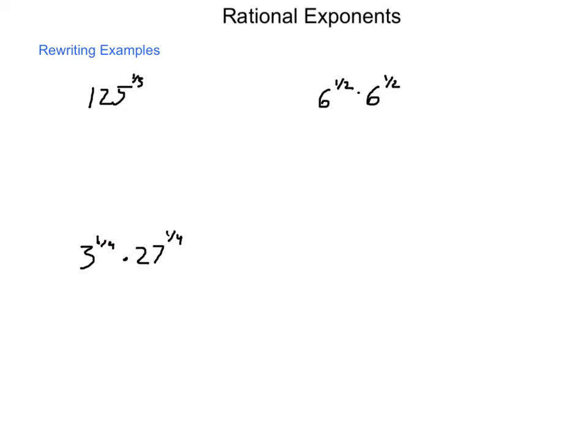So if I have 125 to the 1 third power, how would this be rewritten? Well, 125 stays the same. That is our radicand. And we're going to turn this into a root. Now, since this is a 1 third power, the 3, that denominator, becomes our index. So we get the cubed root of 125. Now if you want to go through and simplify this, that's the cubed root of 5 cubed, also known as just 5.